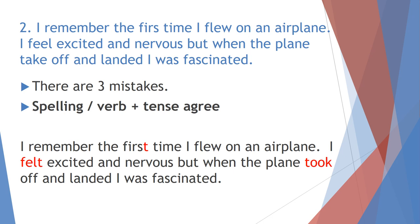Spelling mistakes are largely avoidable since you have spell-check tools available. The more important point here is verb tense agreement. It should be 'I felt excited' - past tense - because the first sentence says 'I remember,' which signals a memory, so everything is in the past. Similarly, 'take off' must be changed to 'took off': 'I felt excited and nervous, but when the plane took off and landed, I was fascinated.' Be careful not to change tense in the middle of a sentence.